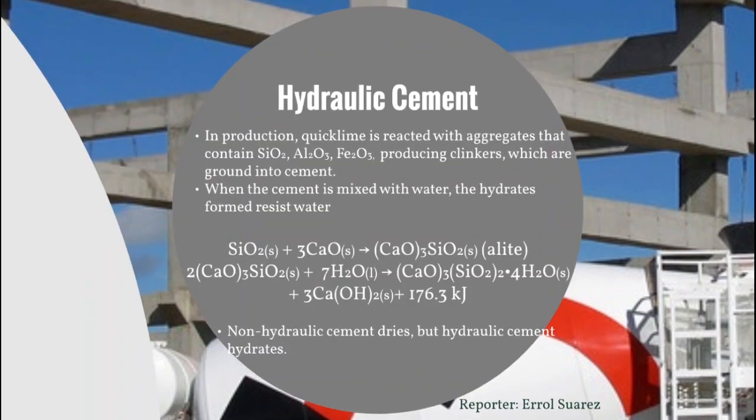Most cement used today is hydraulic, and one of those is Portland cement, which this report focuses on. In the production of hydraulic cement, quicklime is reacted with aggregates like sand which contain silica, alumina, and iron oxide. These form clinkers, which are ground into cement. One of these clinkers is tricalcium silicate (alite), formed from silica and quicklime. The hydraulic cement sets when compounds like alite are mixed and reacted with water, forming hydrates and calcium hydroxide in an exothermic reaction.